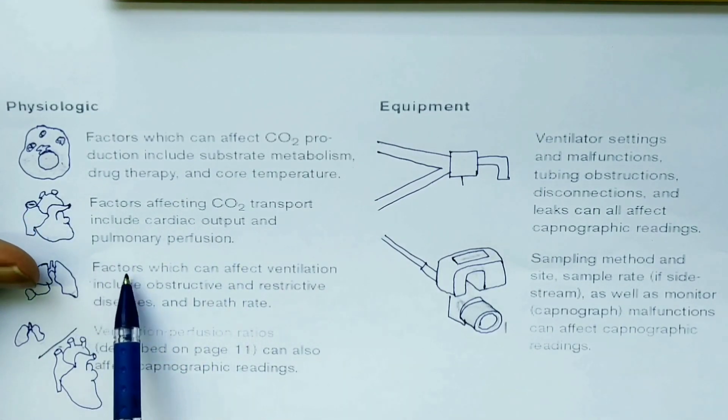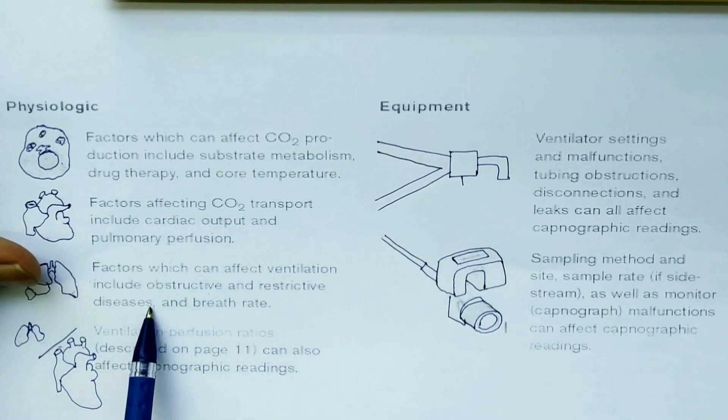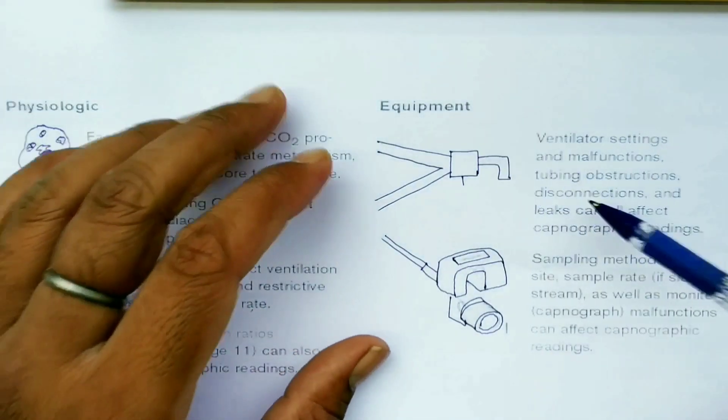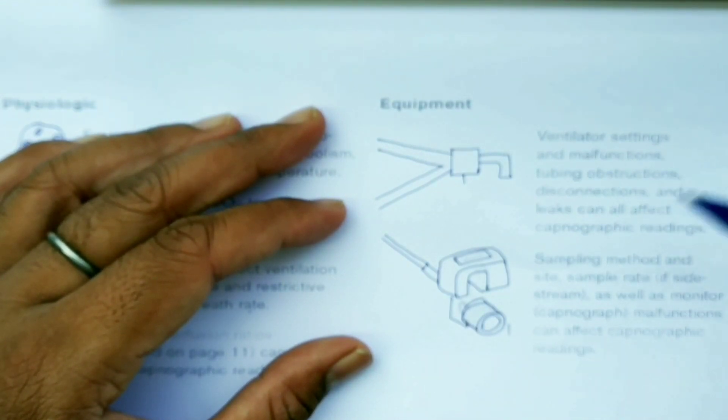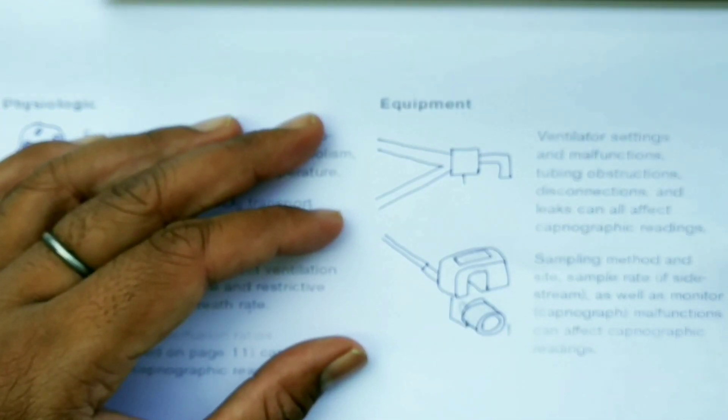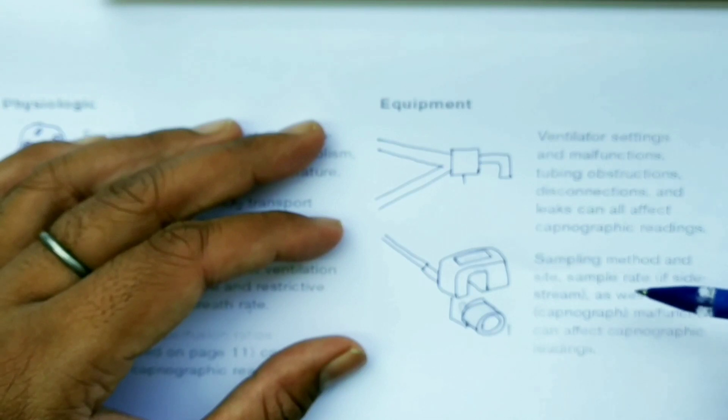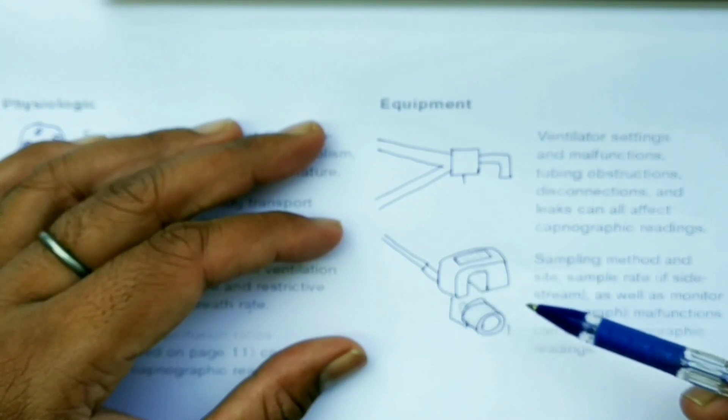Then we have the factors which can affect ventilation, including obstructive and restrictive diseases and breath rate. The ventilation perfusion ratio is also an important parameter. In equipment, ventilation setting and malfunction, tubing obstruction, disconnection and leakage all can affect the capnography readings. If we are taking from the sample, the sampling method and the site of sampling can be a major factor for the ET CO2 readings.